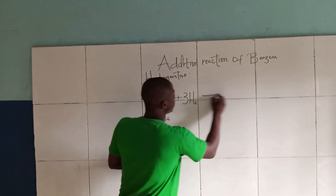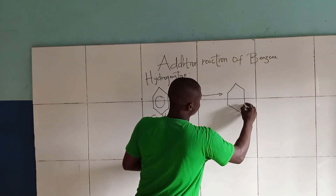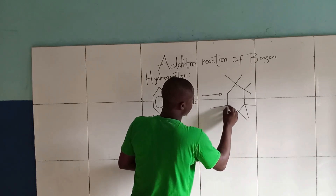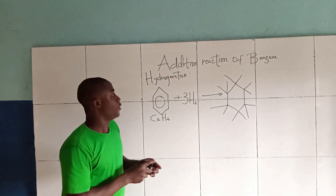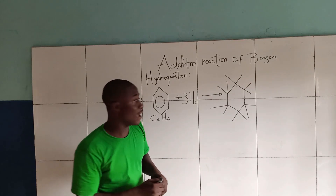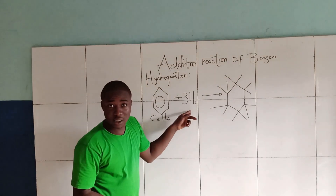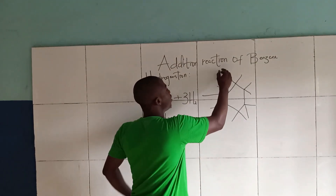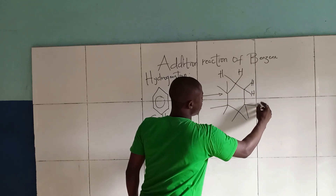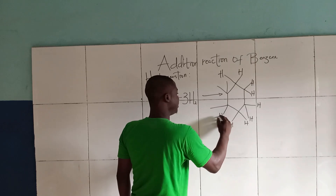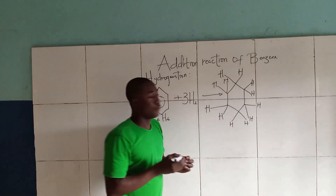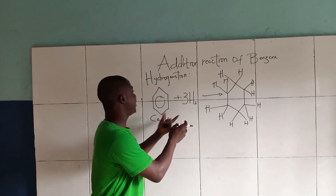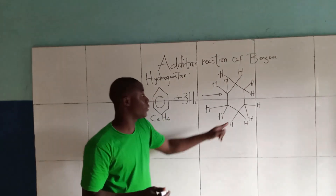The product is simply this. Since you are adding three moles of Hydrogen gas, it becomes six atoms of Hydrogen gas. Each carbon bears a Hydrogen atom. This product form is a cyclohexane. So whenever Benzene undergoes an addition reaction, we are going to get the cyclohexane.